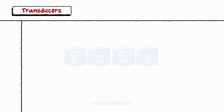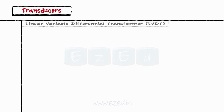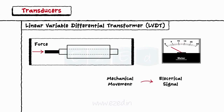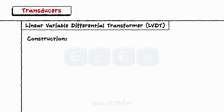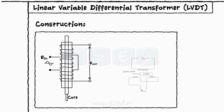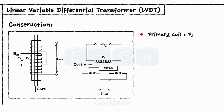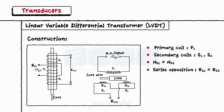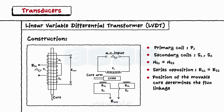The next type of transducer we will study is a linear variable differential transformer, abbreviated as LVDT. The motion of an object to which the LVDT is coupled is converted into a corresponding electrical signal. A linear variable differential transformer consists of three coils: one primary coil P1 and two secondary coils S1 and S2, wound on a hollow cylindrical former. Secondary coils have equal number of turns but are connected in series opposition, meaning that the EMF voltages induced in them are opposite to each other. Primary coil is connected to AC mains. A movable soft iron core slides inside the hollow former. The position of the movable core determines the flux linkage between the primary winding and each of the two secondary windings.